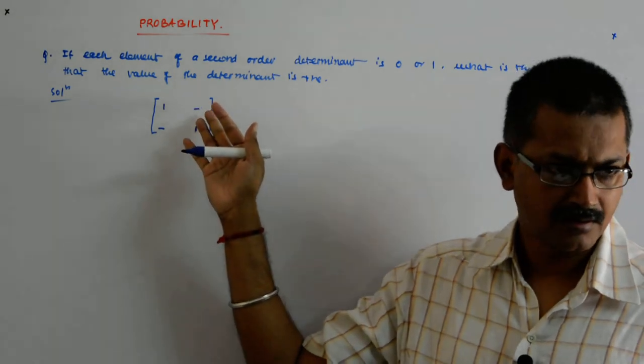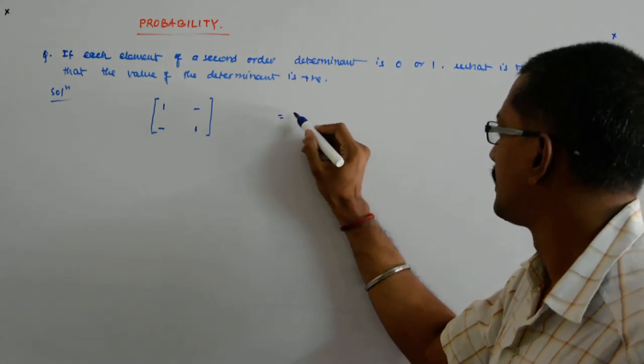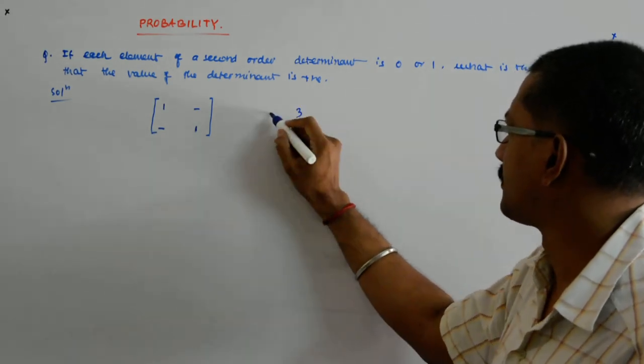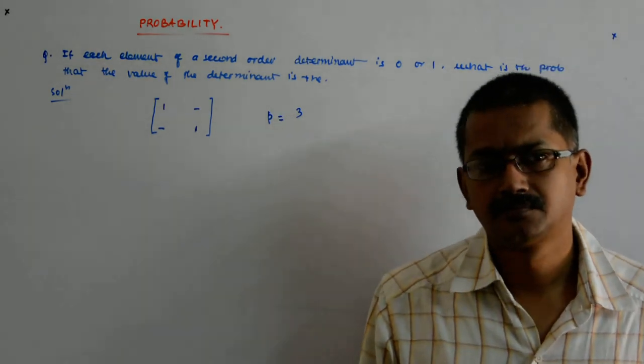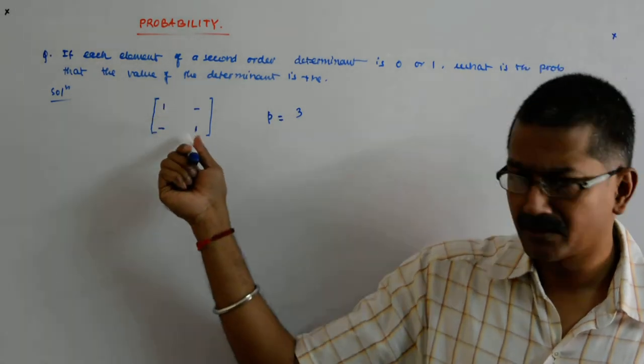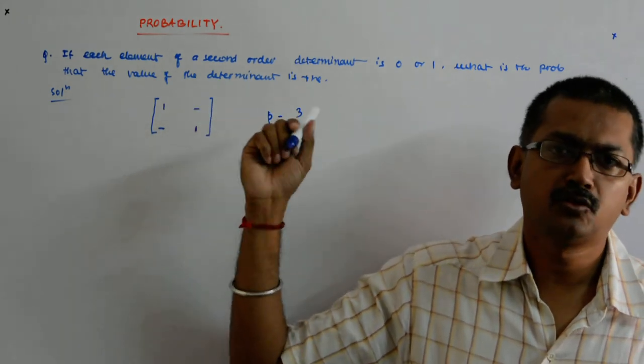Okay. So there are only 3 determinants whose value will be positive. Do we get that? For this to be 1 and this to be 0, there are only 3 possibilities.